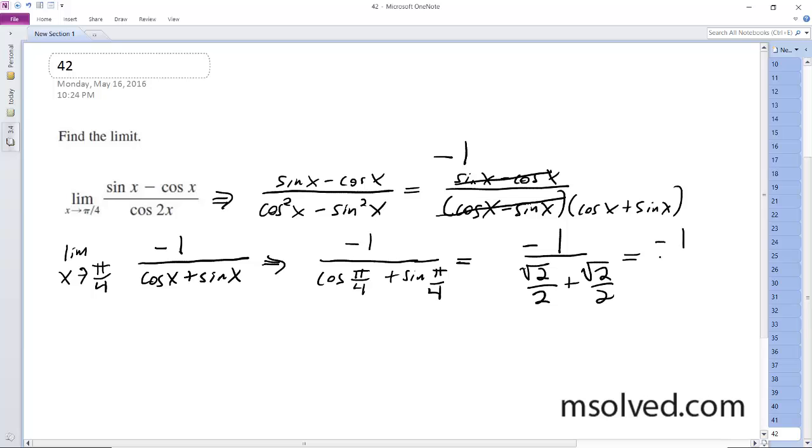And we get negative 1 over 2 times root 2 over 2. Cancels out, and we get negative 1 over root 2. And that's it.